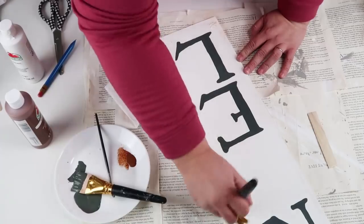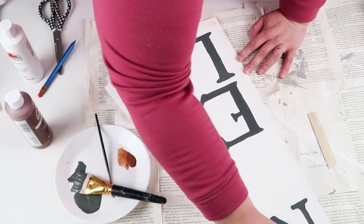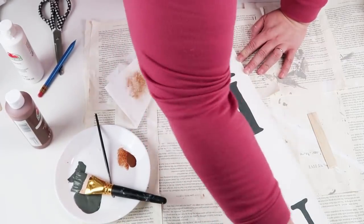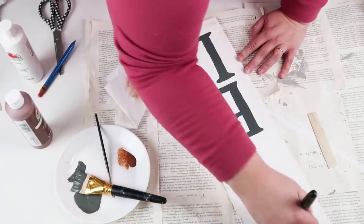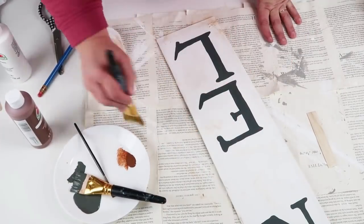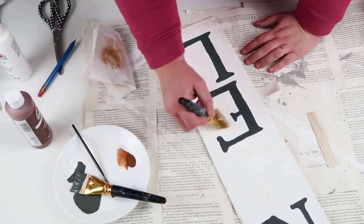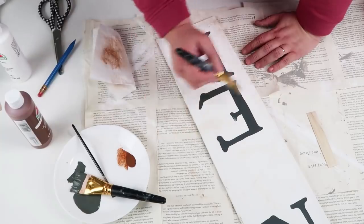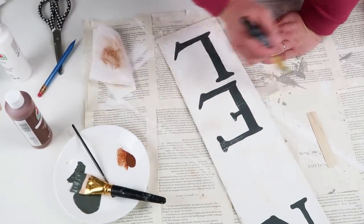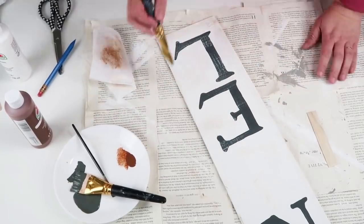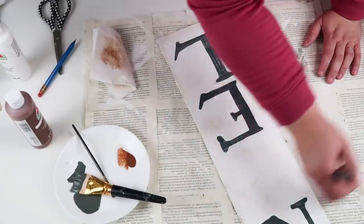Once I was all done with the letters and it dried, I took some brown paint and I'm lightly distressing it. Then I'm coming back in with some white and going over to make sure it wasn't too much. Then I'm lightly dry brushing over the letters because it's going to give it that frosty look for Christmas time. I think this is just so pretty—the texture really popped out on the letters.